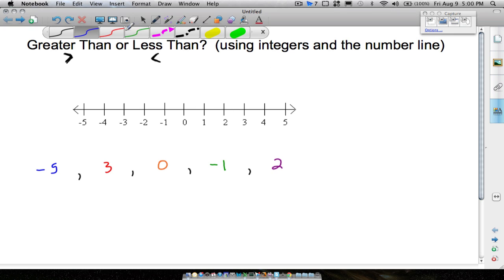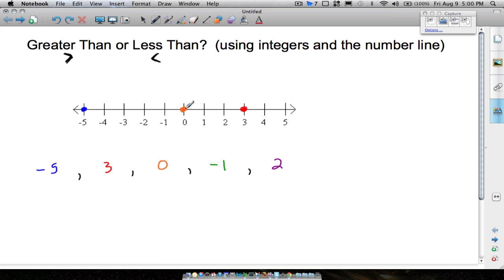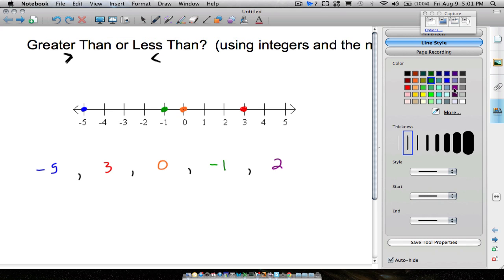So let's plot these points on the number line first. Negative five right there, three here, zero, negative one, and a positive two.